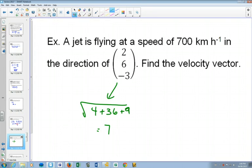So that direction vector right now has a length of 7. We want a direction vector that has a length of 700. So what would we have to do? Times it by 100.